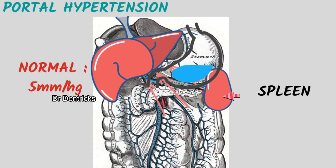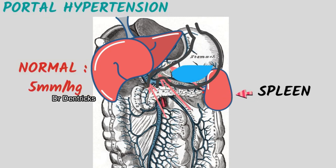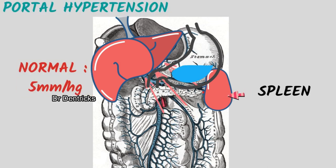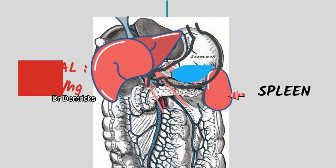The main cause behind Gamna-Gandhi bodies is portal hypertension. The portal vein, or hepatic portal vein, is a major vessel that drains the gastrointestinal organs — stomach, intestine, pancreas, and spleen. The normal pressure inside the portal vein is 5 mmHg; if it is more than that, there will be congestion of these drained organs.